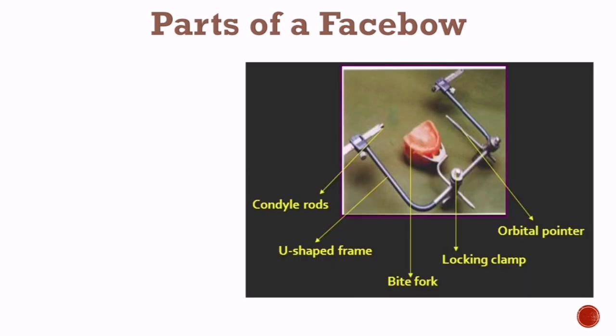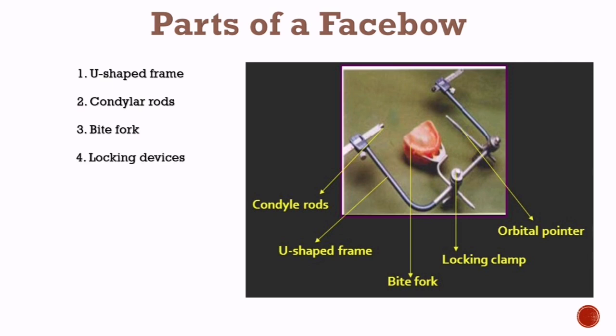Now let's have a look at the parts of a face bow. A face bow has five parts: first, a U-shaped frame; second, condylar rods; third, bite fork; fourth, locking devices; and fifth, orbital pointer pin.